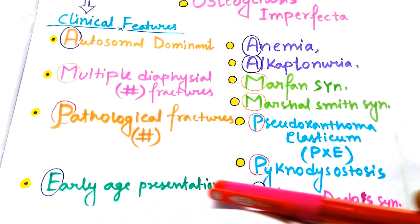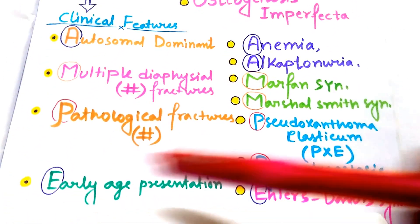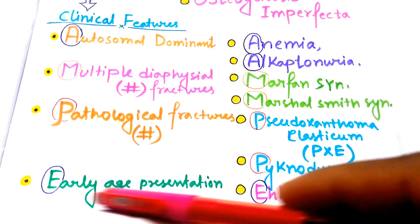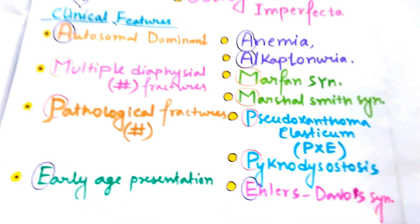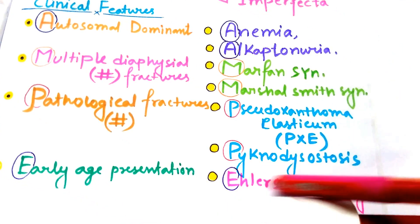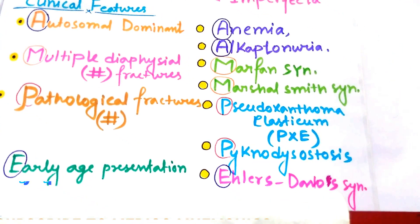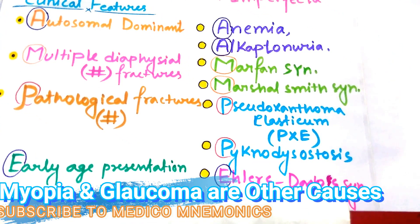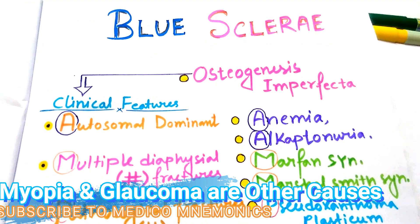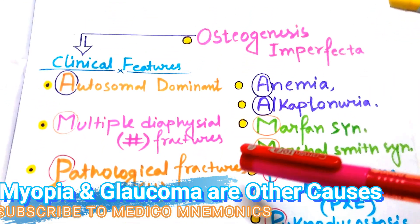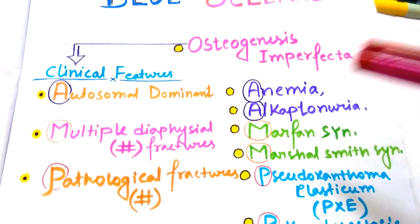The presentation of osteogenesis imperfecta is at an early age, so E stands for earliest presentation and also for Ehlers-Danlos syndrome. With this mnemonic, we are revising two topics at the same time.